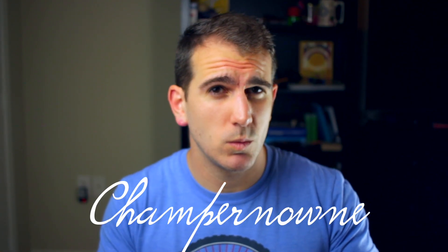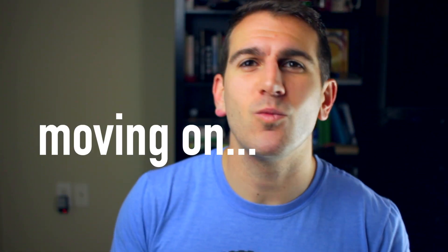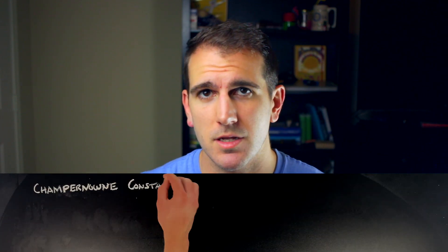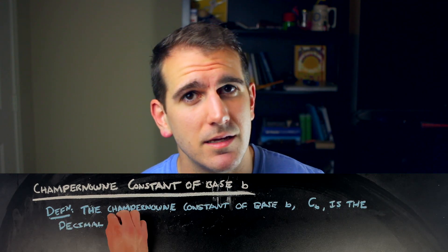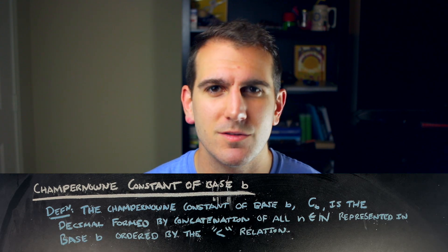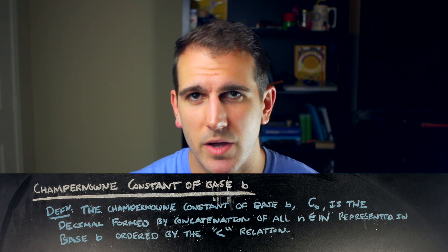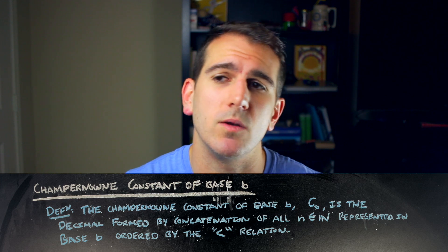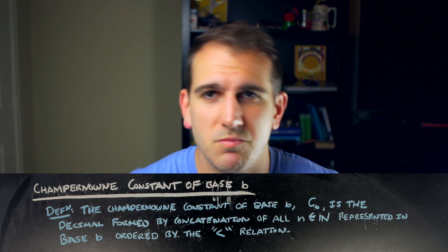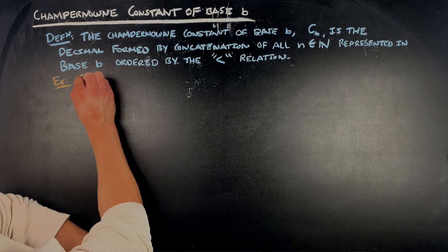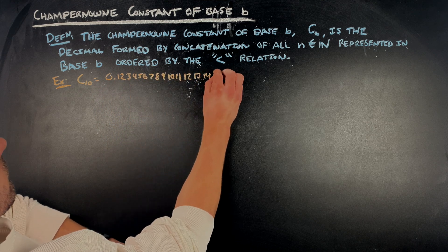Leading with the formula like this is sort of like leading with the punchline, in that it calculates a particular constant called Champernowne's constant of base b. That constant is defined by the concatenation of all natural numbers represented with respect to a particular base b and ordered by the less than relation. And the constant just comes out to counting, essentially. So C10 is going to be equal to 0.123456789101112131415161718192021 and so forth.